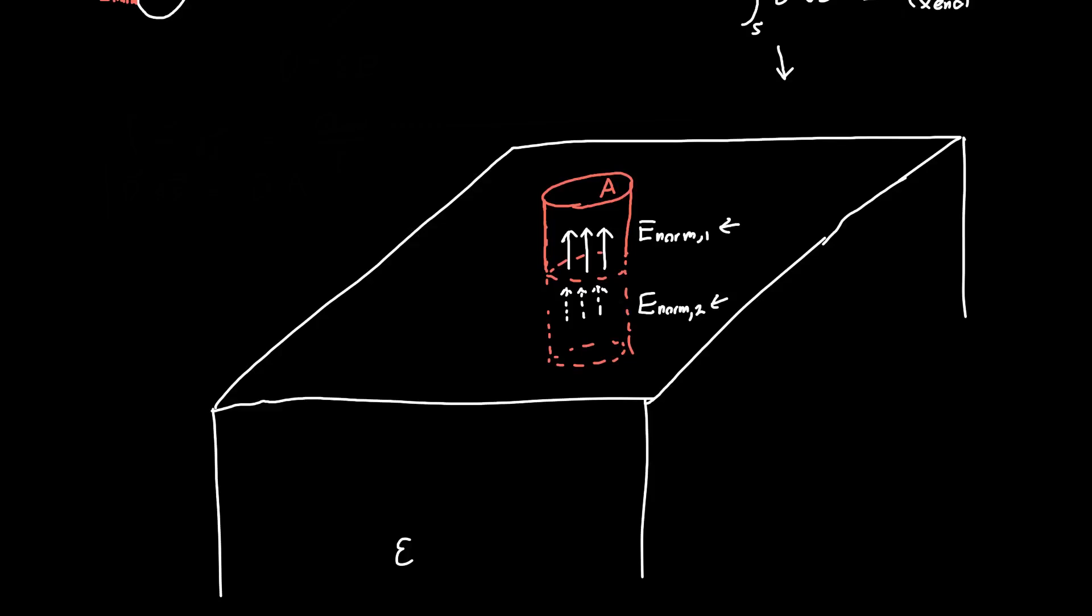Now, to actually carry out this integral, we need the electric flux density, D, and not the electric field. So we have some, equivalently, we have some normal component of D, and that's just equal to epsilon 1, so the permittivity of material 1, times E1, the normal component, or I guess I should write that as E-norm 1. And similarly, we've got a normal component of the electric flux density inside the material, D-norm 2, and that's just epsilon of the material. So let's actually call this epsilon 2, times E-norm 2.